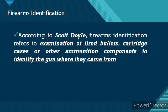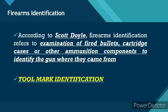Firearms identification is also otherwise known as tool mark identification. After the firearm has been fired and the bullet has been propelled, there is also a shell that gets ejected from the firearm. There would be a lot of marks imprinted on the shell and on the bullet, which serve to determine from which firearm it was fired.